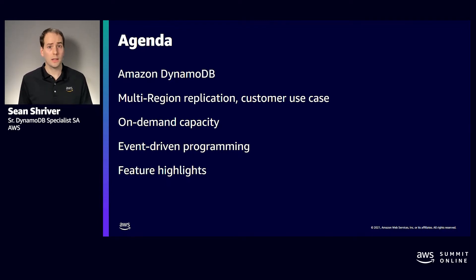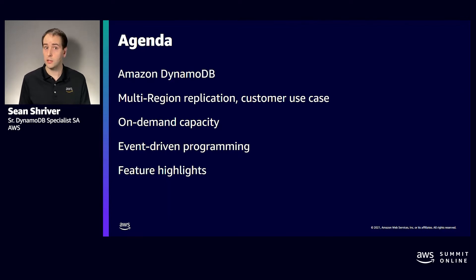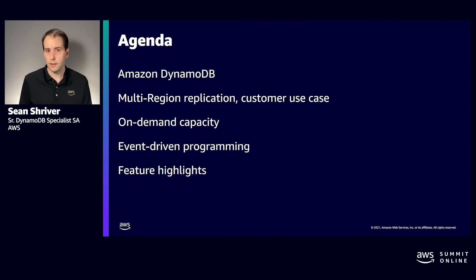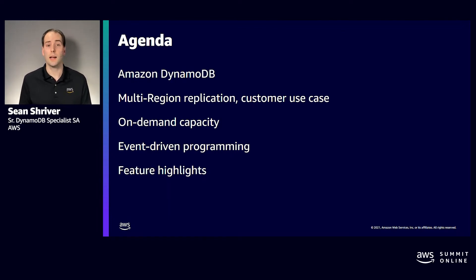In this talk, we're going to cover DynamoDB Global Tables, which offers multi-region, multi-active replication, our pay-per-request billing model called OnDemand, and then discuss how a customer used both to great effect to launch their video streaming service a few years ago. Then we'll cover two different ways to react to row-level changes in your DynamoDB table — with DynamoDB Streams or our newer feature, Kinesis Data Streams for DynamoDB.